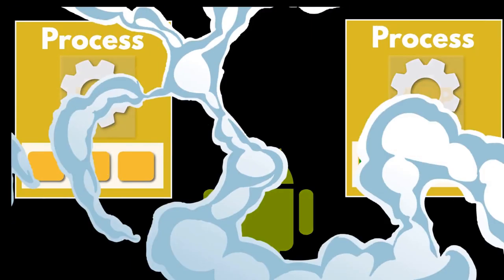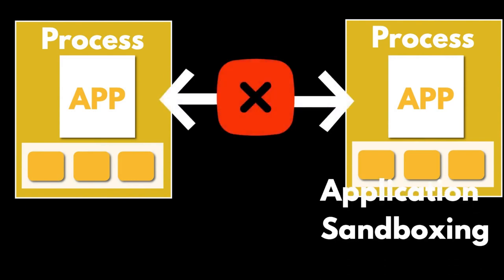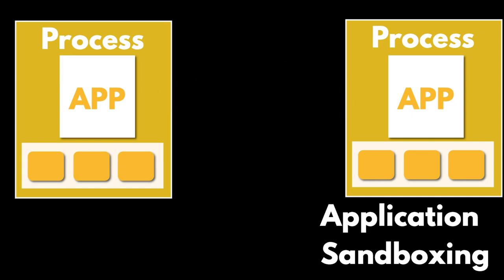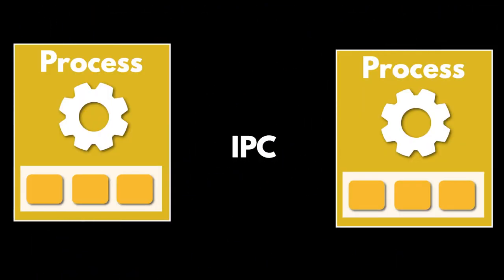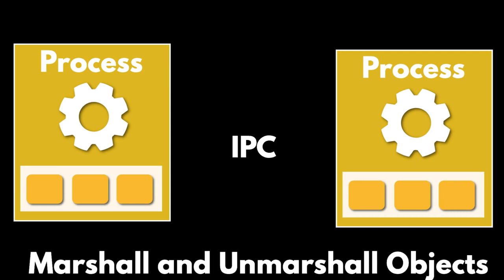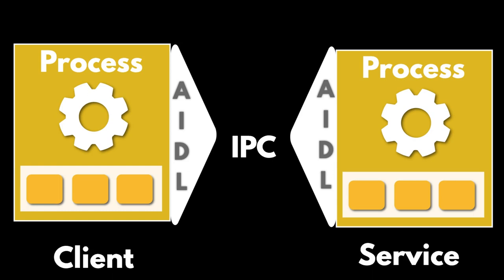Each application in Android runs in its own process, and an application cannot directly access another application's memory space. This is called Application Sandboxing. In order to allow cross-application communication, Android provides an implementation of Interprocess Communication, or IPC, protocol. IPC protocols tend to get complicated because of all the marshalling and unmarshalling of data that is necessary. AIDL allows you to define the programming interface that both the client and service agree upon to communicate with each other using interprocess communication.